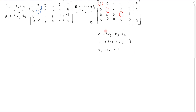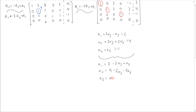From these three equations we can write out the full set of solutions. Starting with x1 equal to 2 minus 2x3 plus x5, rearranging the first equation. x2 equals 4 minus 2x3 minus 2x5 from rearranging the second. x3 equals x3 since it's a free parameter. x4 equals negative 1 minus x5 from the third equation. And x5 equals x5 since it is also just a free parameter.